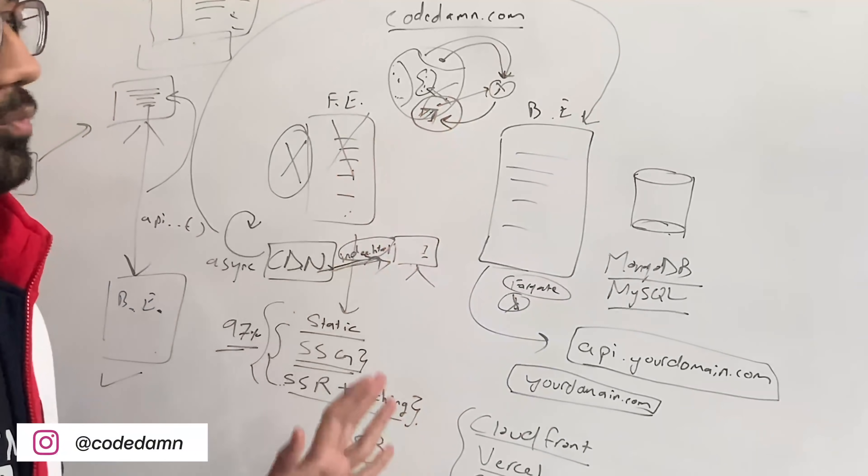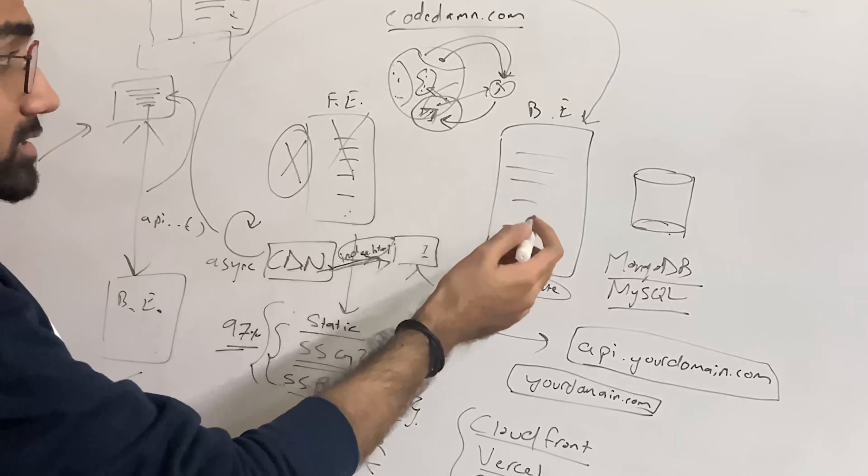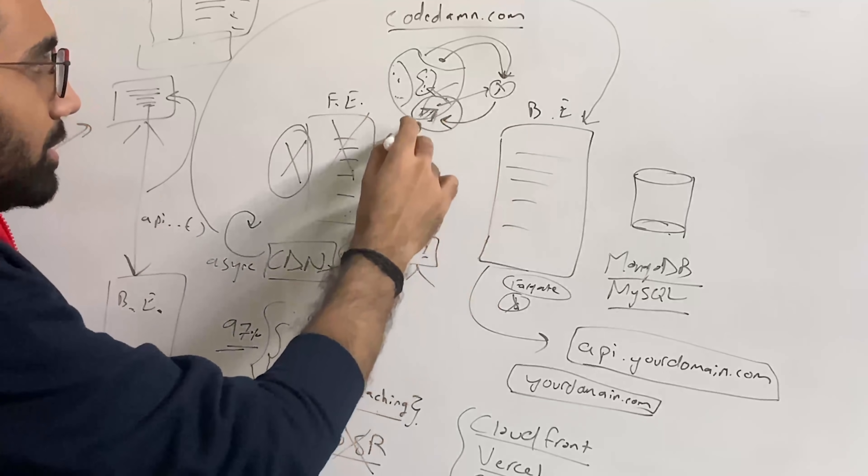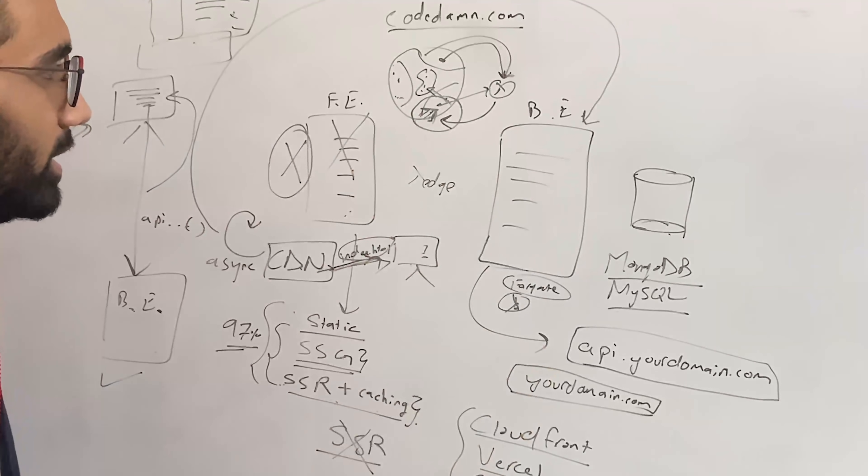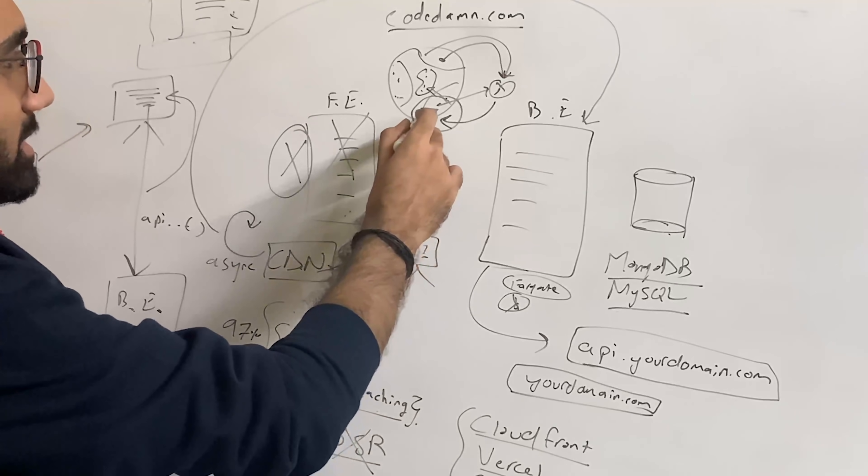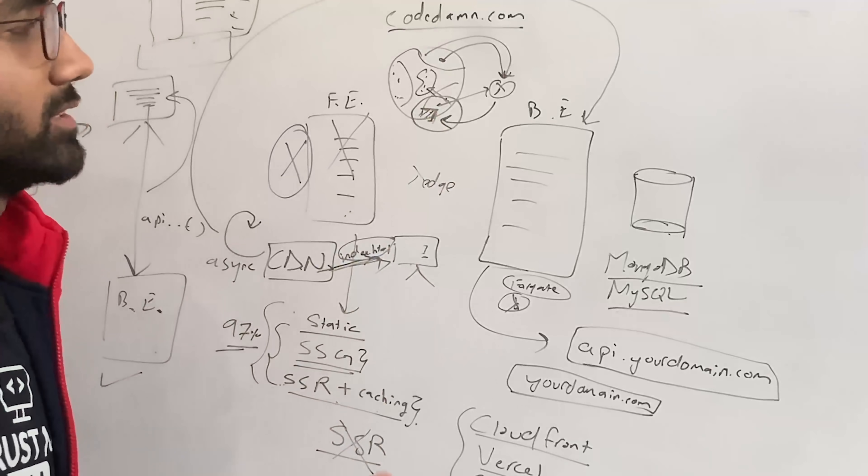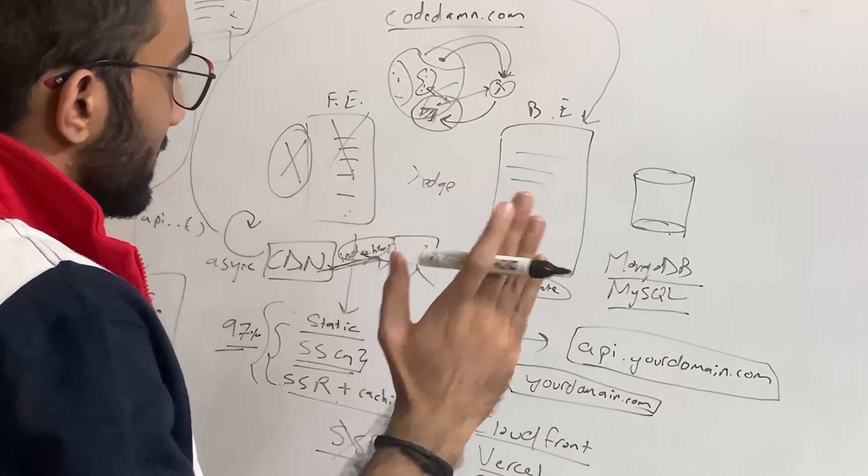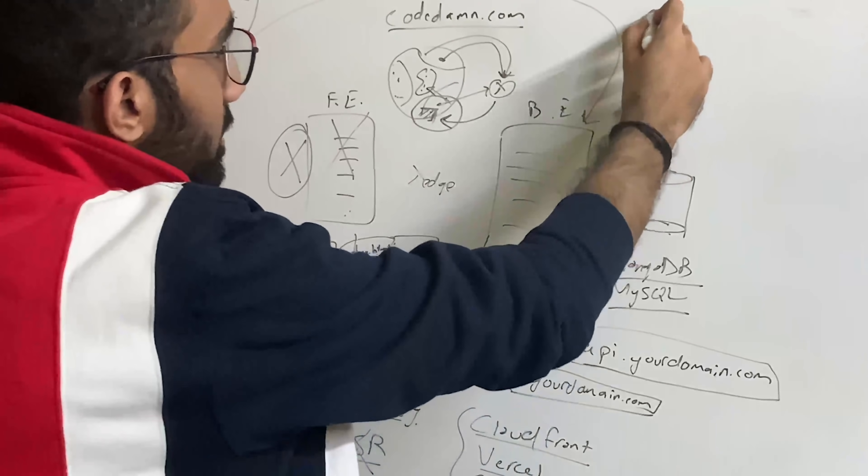This is at least what we follow right now on codedum. If there is a way to use lambda edge somehow inside of a VPC and then call it and connect to a database, but then again I don't think that might be possible because of the latency issue, until your database itself is not globally distributed which is like another topic altogether.